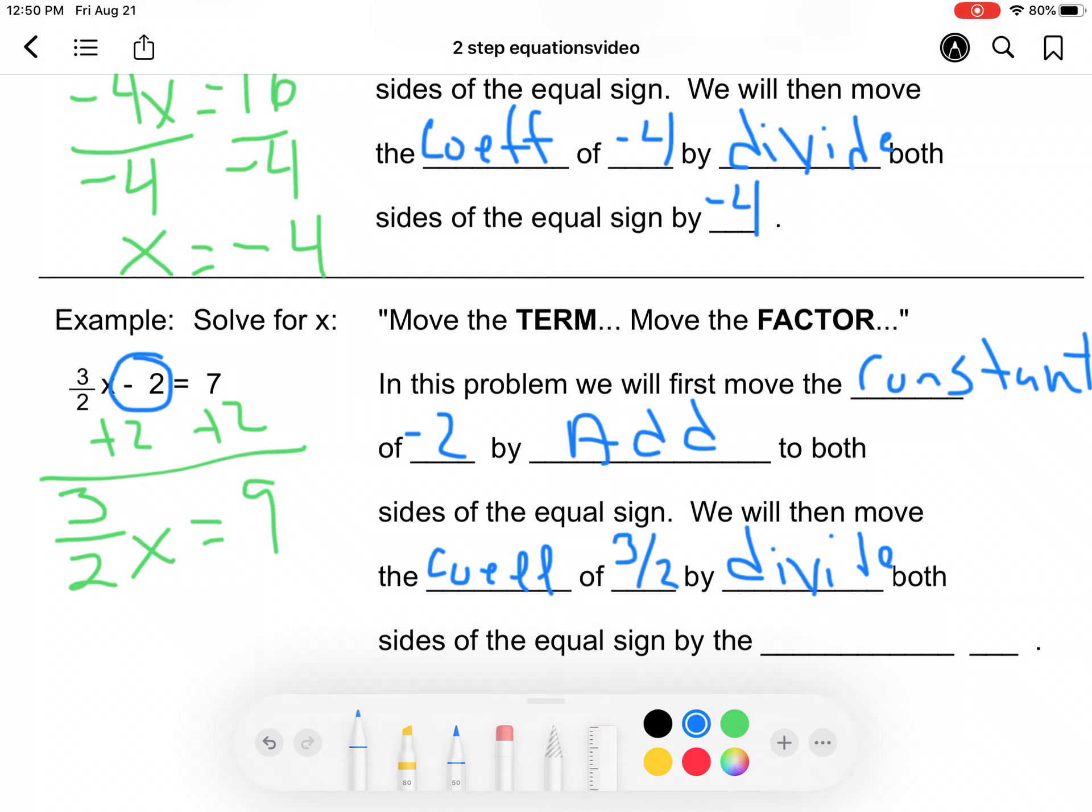So we're going to multiply by the reciprocal, which is 2 thirds. So what we would do here in long form is we would multiply 2 thirds times 3 halves, which is basically division, and 9 over 1 times 2 thirds, which gives me x is equal to 18 over 3.